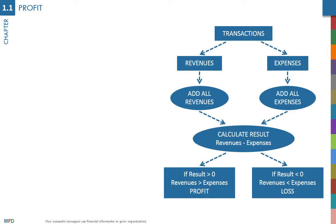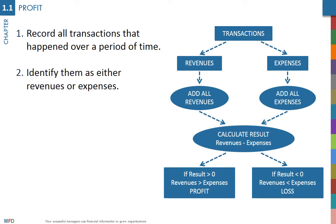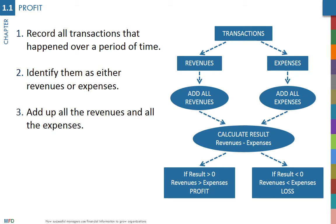Profit is calculated as follows. First, you record all the economic transactions and classify them as revenues or expenses. Then you add all the revenues and all the expenses. The difference is the result.